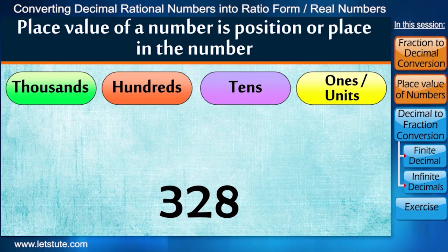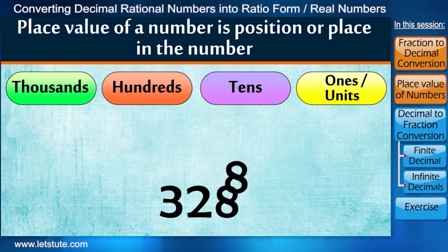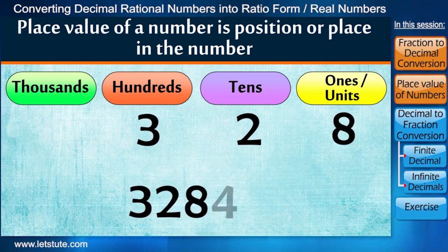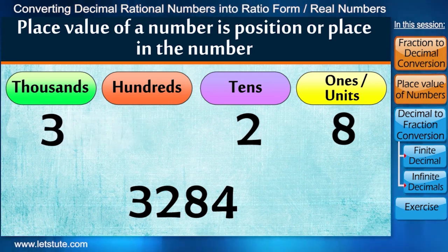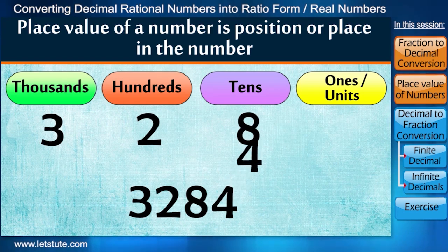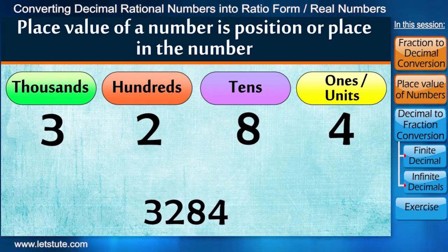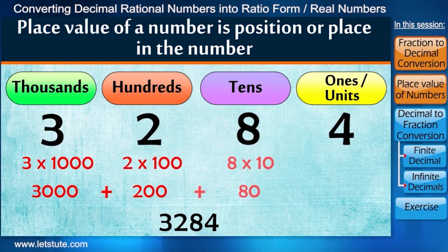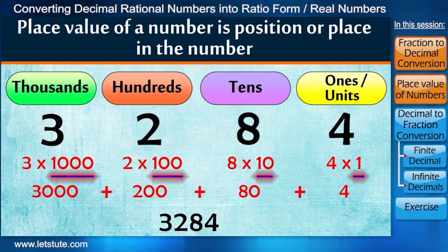In number 328, 8 represents the unit or ones place. 2 is tens and 3 is hundreds place. Now if we increase one digit, then number 3 shifted to the thousands place, 2 is hundreds and so on. This simply means that we have 3 thousands, 2 hundreds, 8 tens and 4 ones. Notice that here each place has a value 10 times the place to its right side.